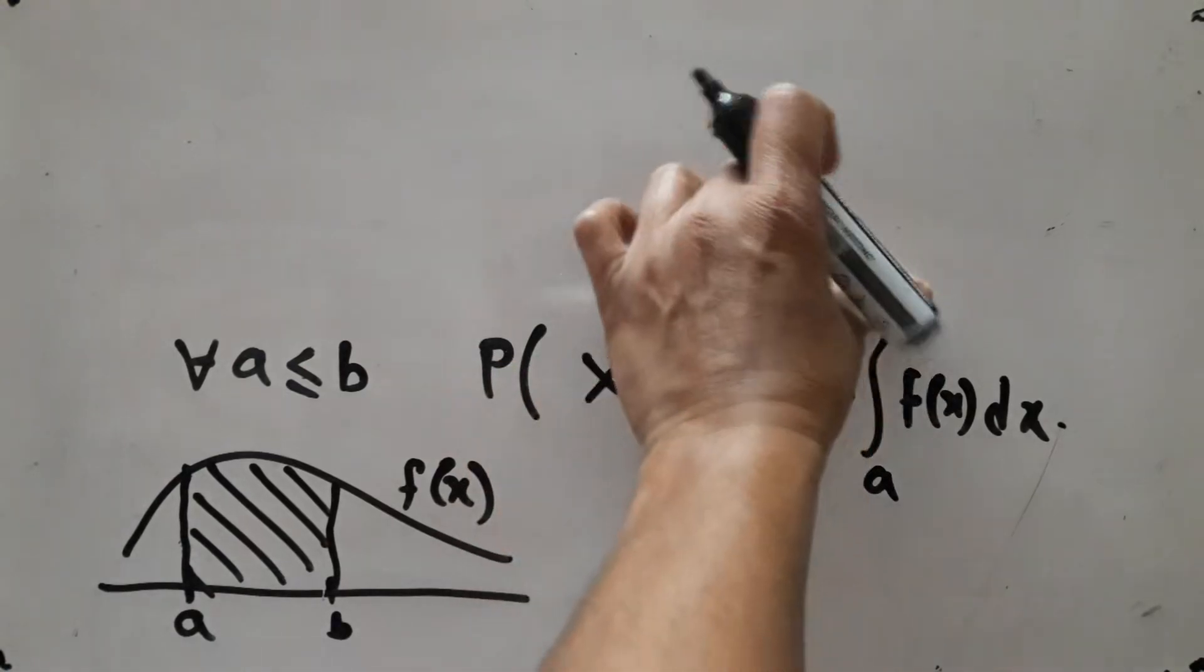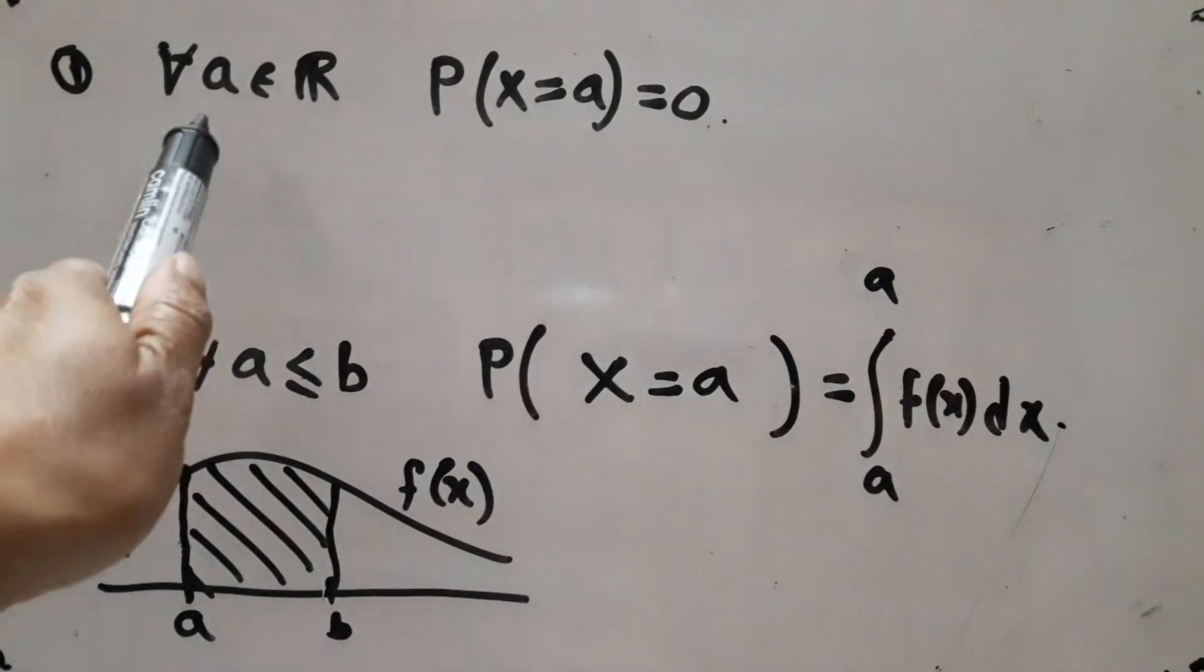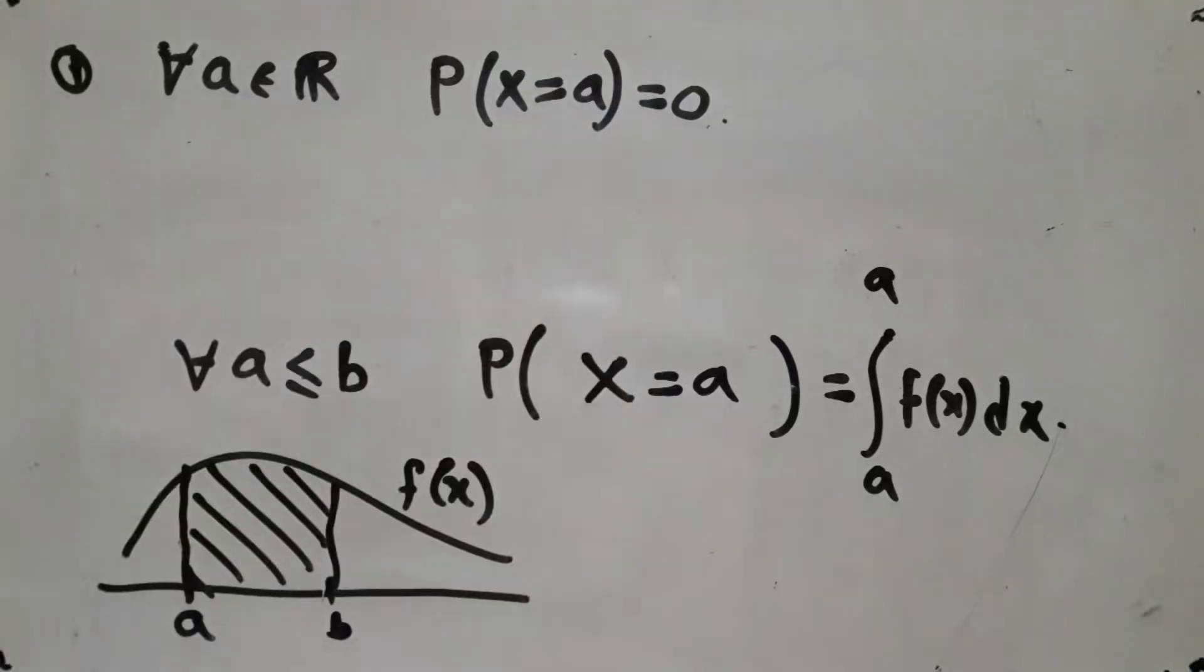And that will be this, which you immediately understand is equal to zero. So we get our property number one: for all a in R, X taking the value a is equal to zero.